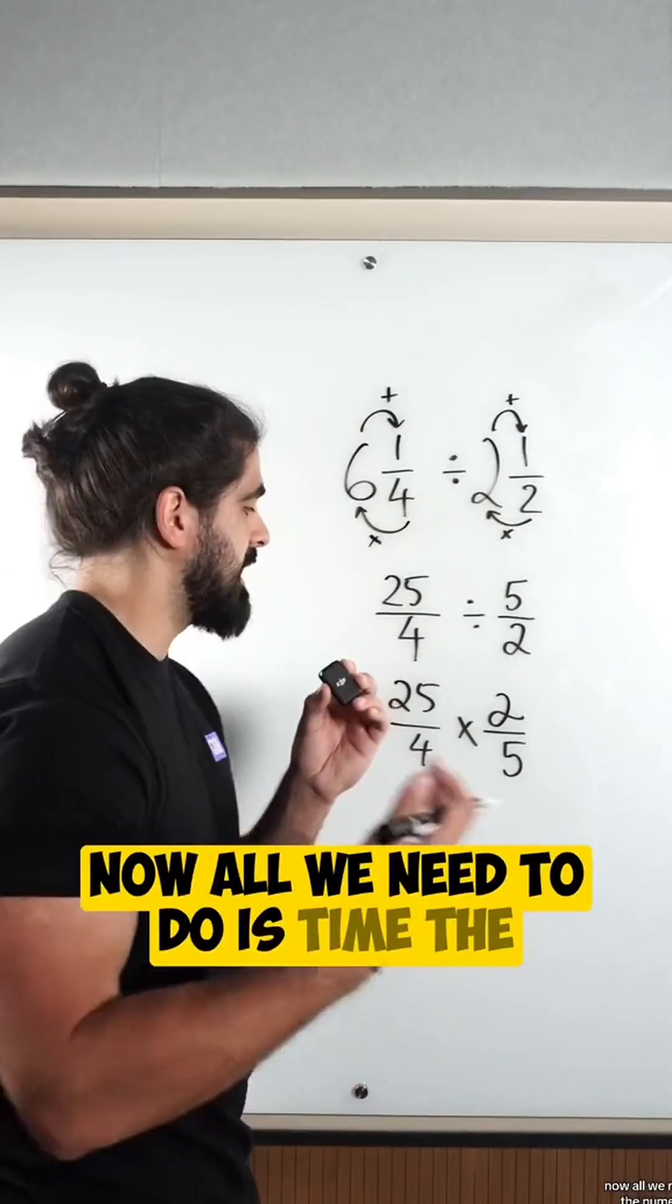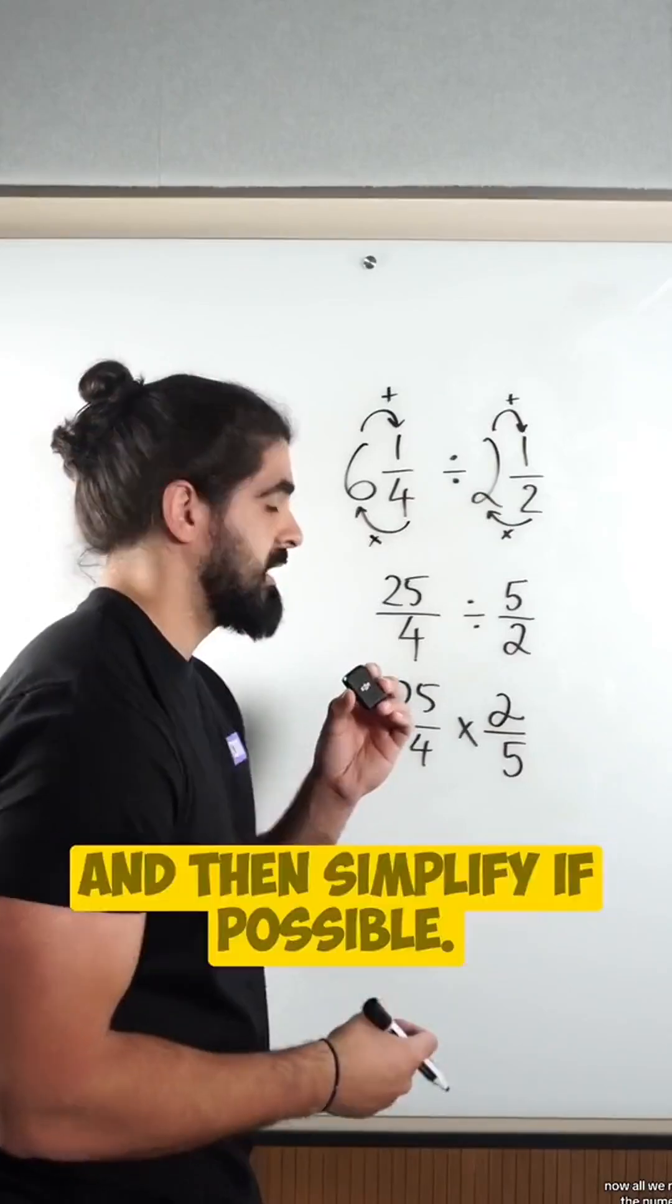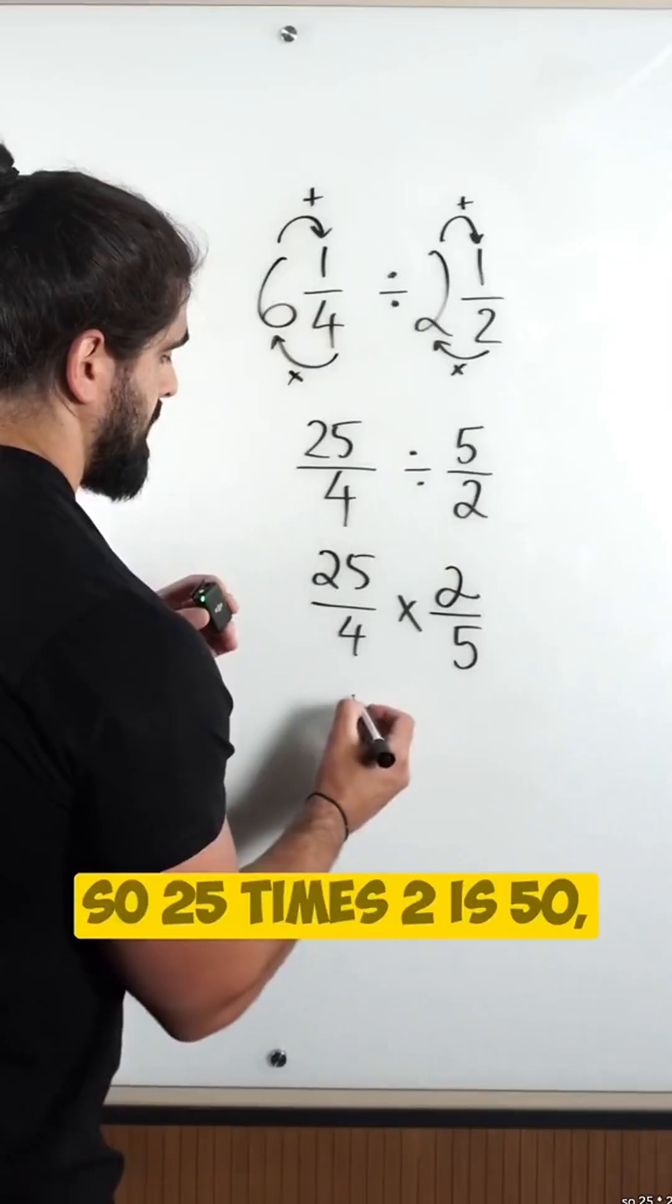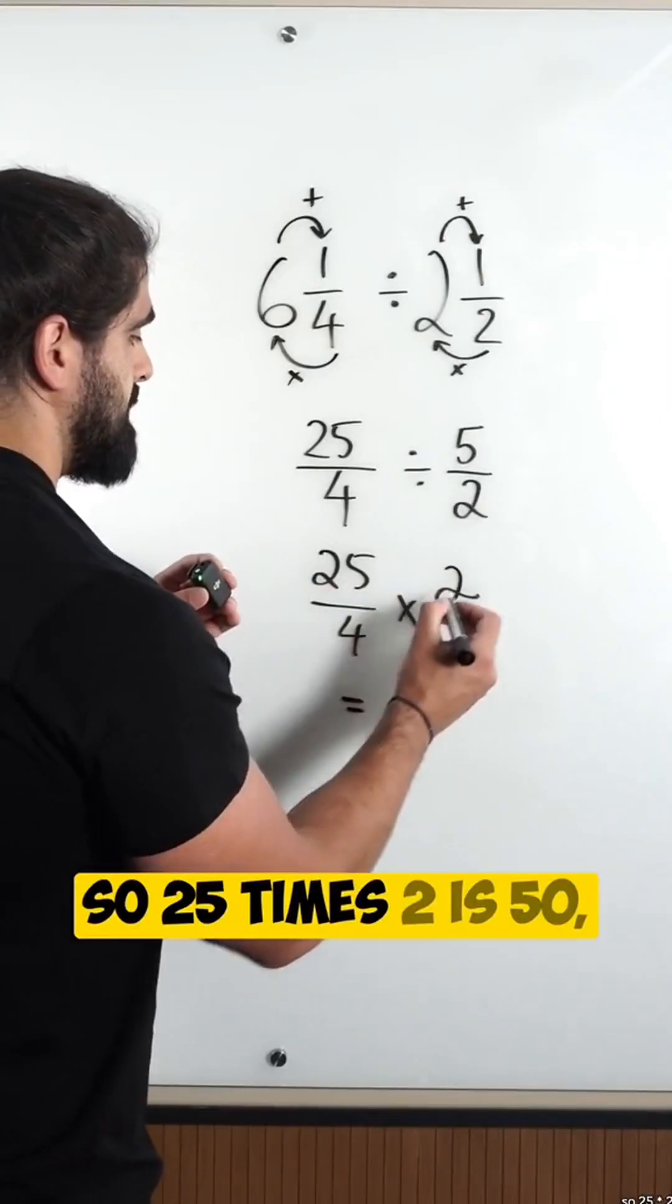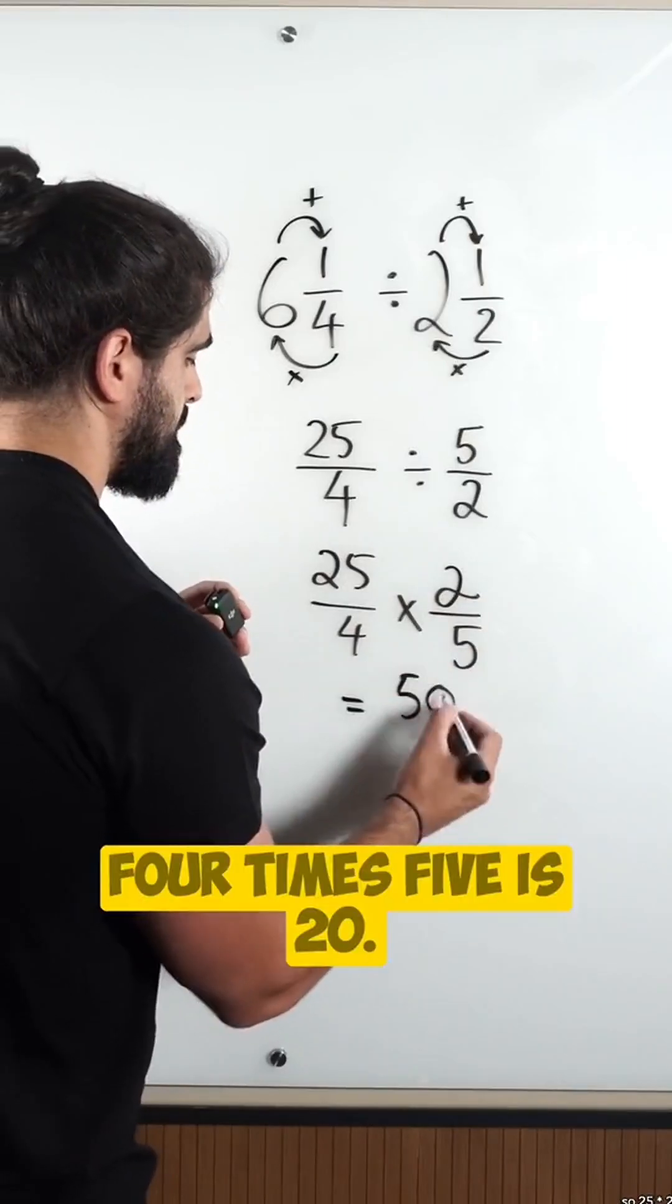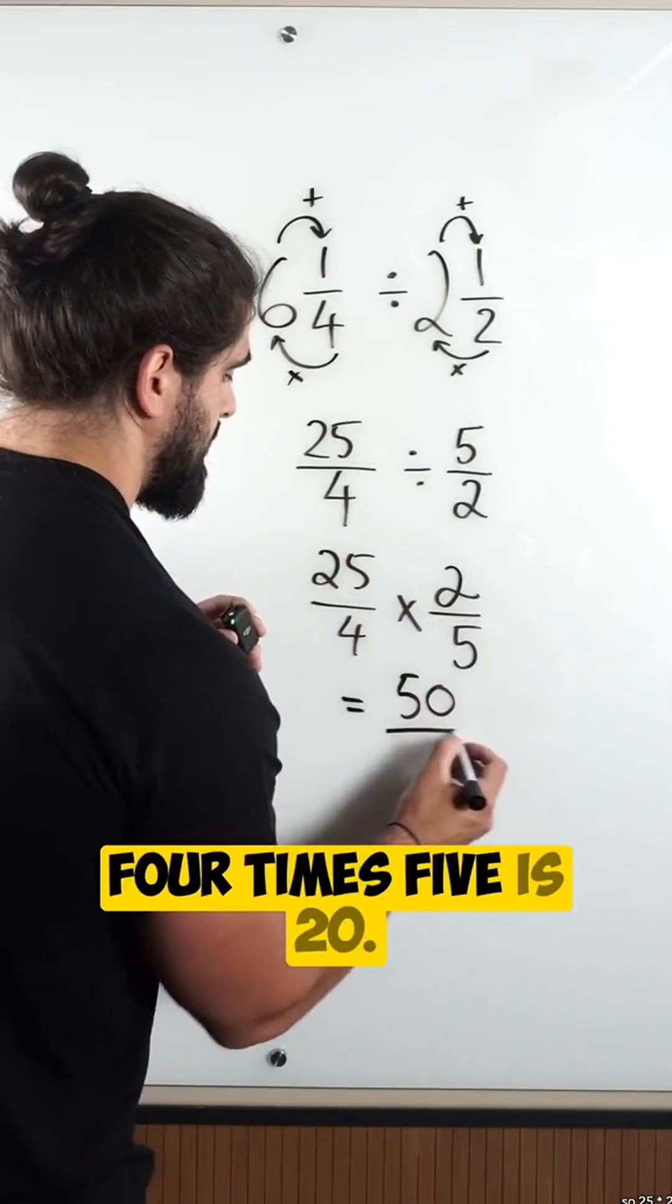Now all we need to do is times the numerators and the denominators and simplify if possible. So 25 times two is 50, four times five is 20.